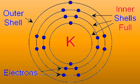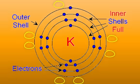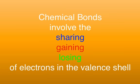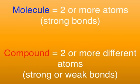When the valence shell of an atom is filled, the atom is considered stable and will be less likely to participate in a chemical reaction. When the valence shell is not filled, it is considered unstable and will readily participate in chemical reactions to form or break chemical bonds. Chemical bonds involve the sharing, gaining, and losing of electrons in the valence shells. Chemical bonds join two or more atoms together to form either molecules or compounds. A molecule is two or more atoms joined by strong bonds, whereas a compound is two or more atoms of different elements joined by either strong or weak bonds. Therefore, all compounds are molecules, but not all molecules are compounds.